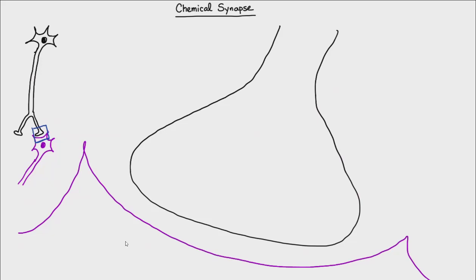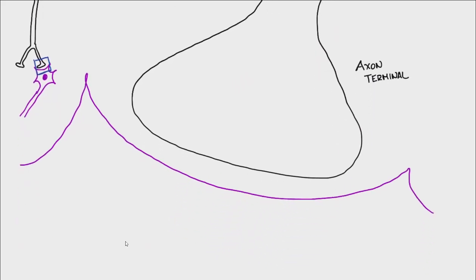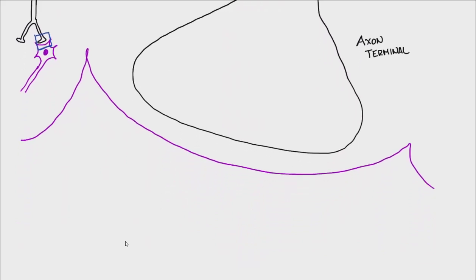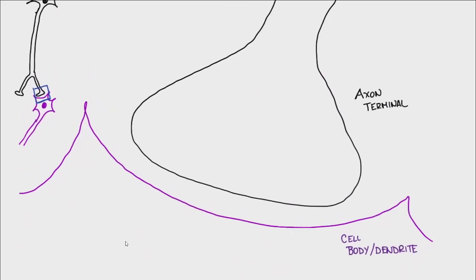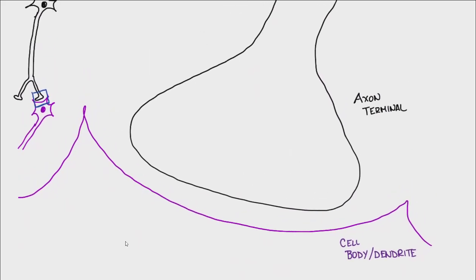This little button you see here — it almost looks like a Hershey's kiss — is the axon terminal. Underneath it in purple is going to be the cell that it's going to communicate with, which is clearly a cell body or a dendrite of another neuron. The entire arrangement is a synapse, meaning it includes the axon terminal of one cell, the space in between the two cells, and the receiving cell of that communication.